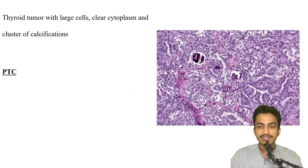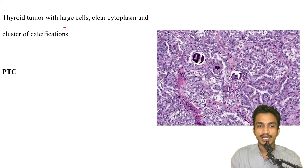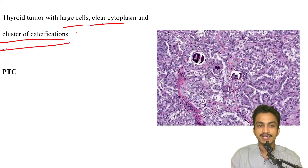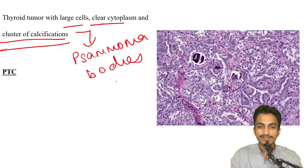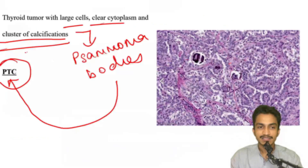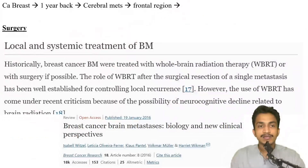A histopathological image showing large cells with clear cytoplasm and clusters of calcifications — these are psammoma bodies, which are commonly seen in papillary thyroid cancer. That is the answer for this image-based question.